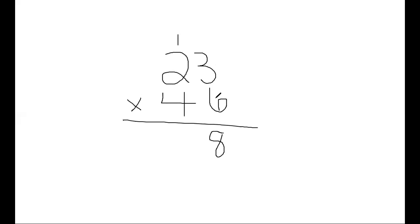And then we're going to multiply two times six. Two times six is 12, and don't forget to add your one in from the top. So two times six is 12 plus one is 13. So I write my 13 down here.